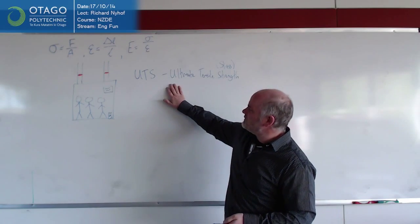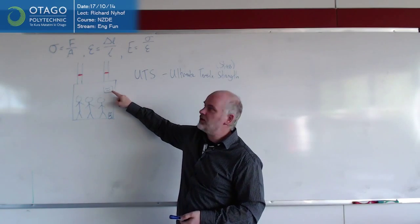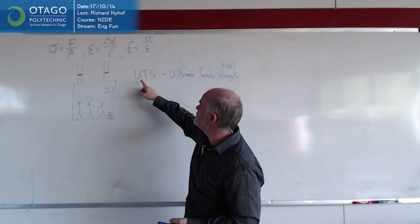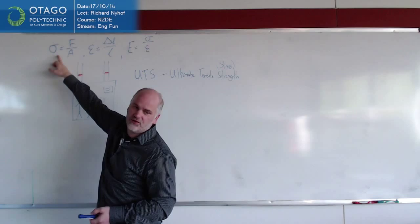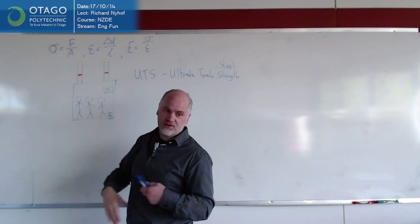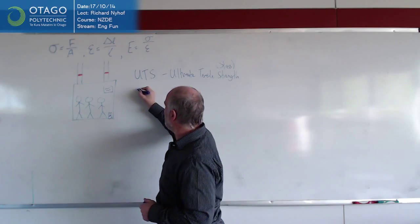So the ultimate tensile stress is not what's used to calculate the load that the lift can handle. When they go through and do the calculations, it's not the ultimate tensile strength that they're putting into this formula to work out what the force or load can be. There's something different, and what the difference is, is what's called a factor of safety.